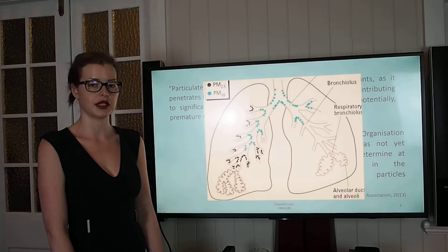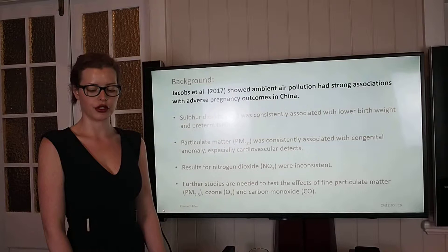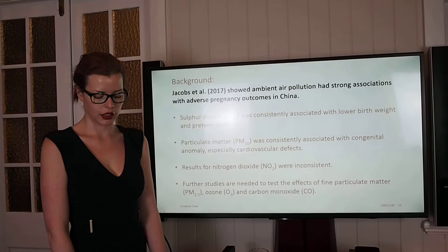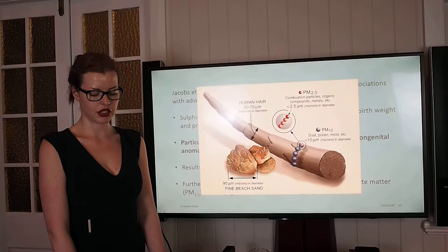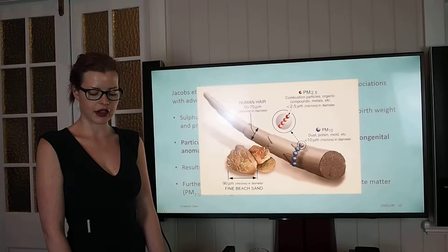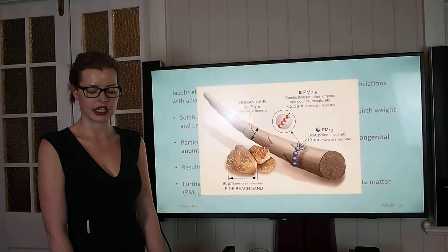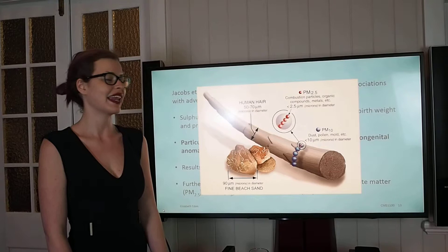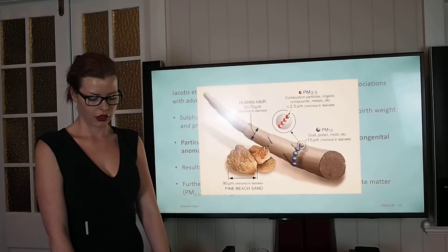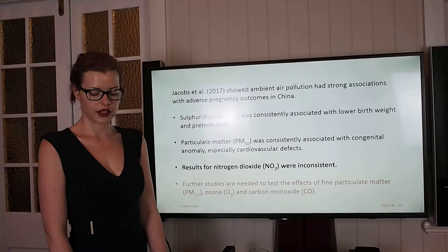A recent article shows that ambient air pollution was seen to have strong associations with adverse pregnancy outcomes in China. Sulfur dioxide was consistently seen to be associated with congenital anomalies, especially cardiovascular effects. PM10 is particulate matter measuring 10 micrometres or less in diameter, while PM2.5 is particulate matter measuring 2.5 micrometres or less in diameter. In comparison to the human hair or a grain of sand, we can see just how small those particles are, and anything smaller than 2.5 micrometres is completely invisible to the naked human eye. Results for nitrogen dioxide were inconsistent, and further studies are needed to test the effects of PM2.5, ozone and carbon monoxide.